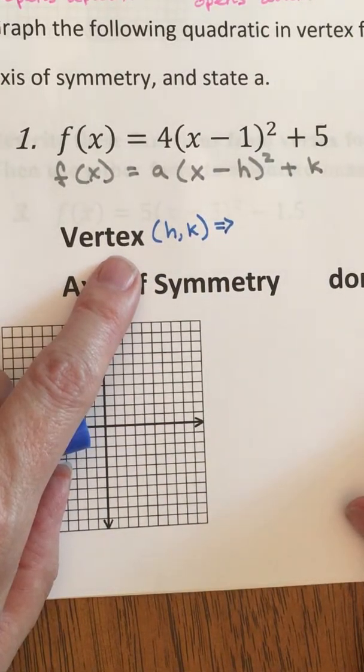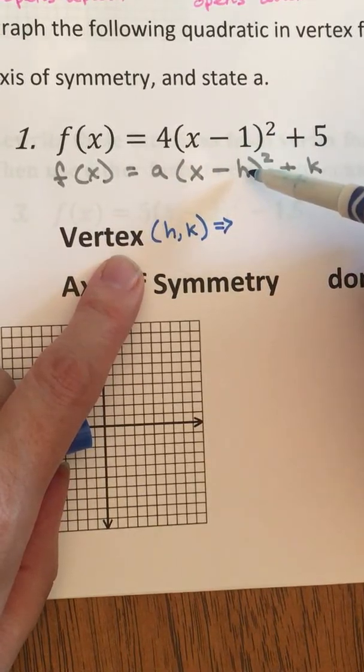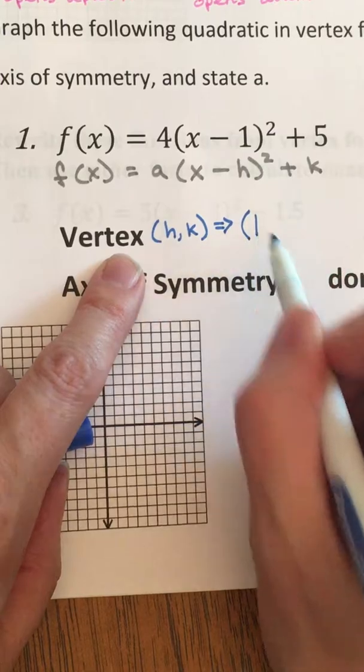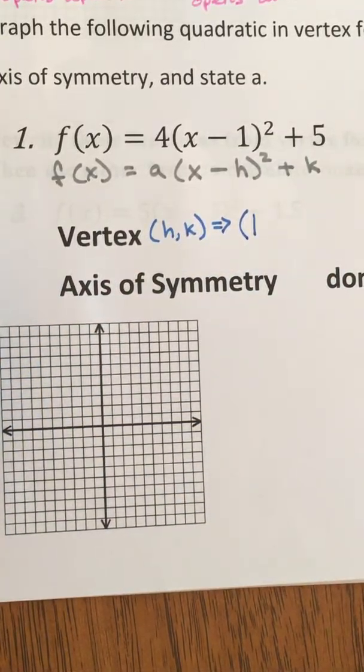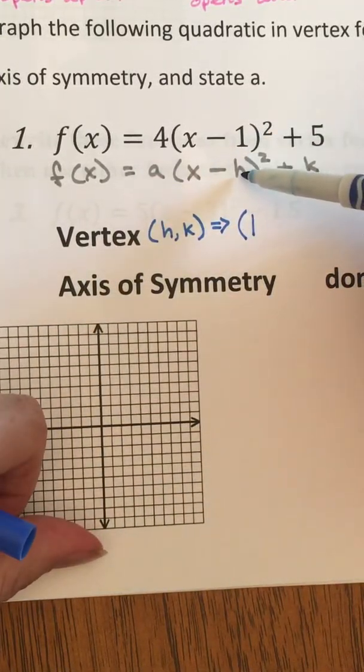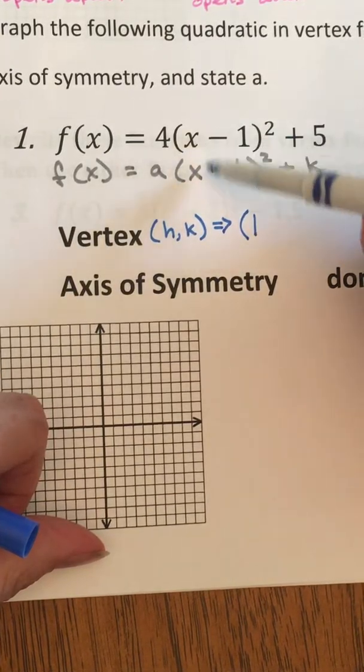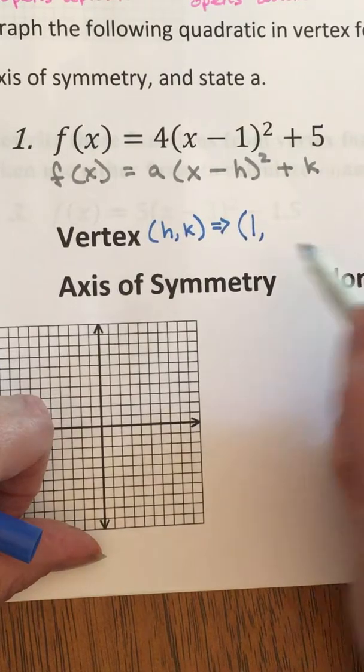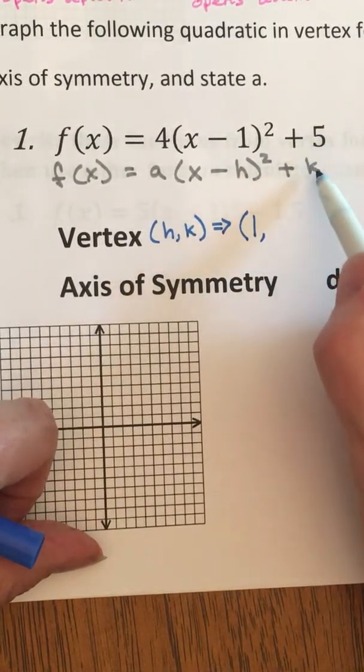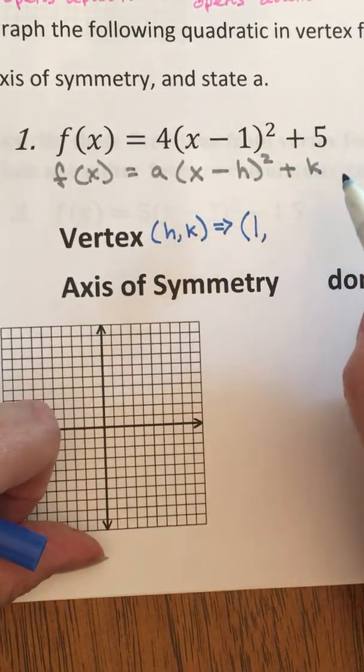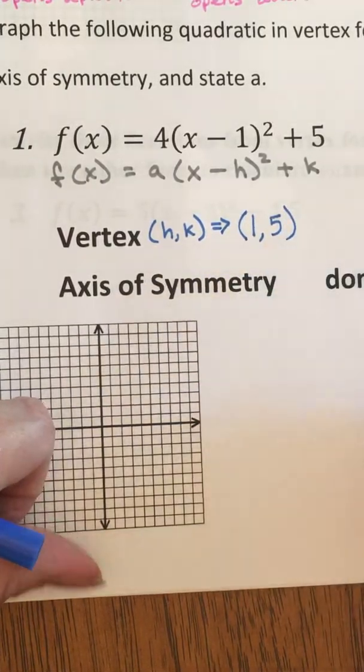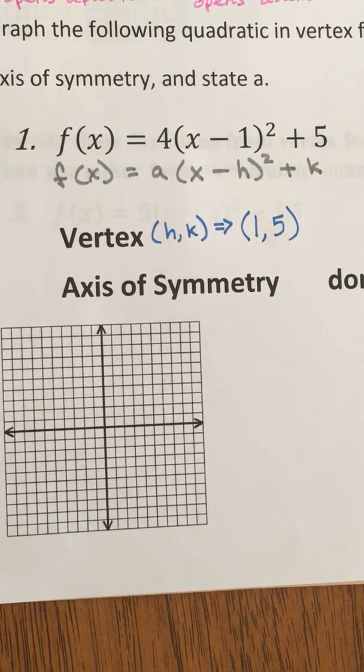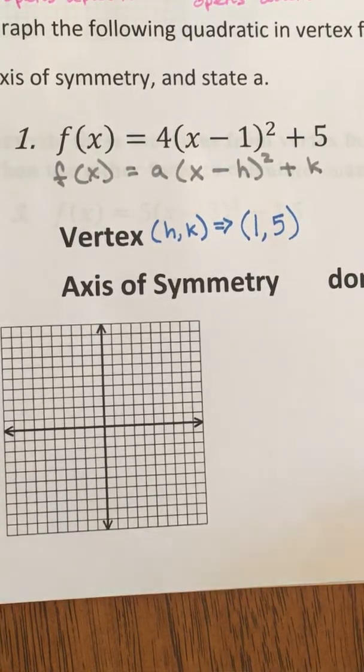So what's in the h location? A one. And I'm going to use positive one. We do opposite the direction of the sign, and I'm taking the number itself. Opposite of this sign. Comma. And then k is whatever k is. That's a 5. So my vertex is the coordinate point, 1, 5. Great. That was easy. It came straight from the equation.